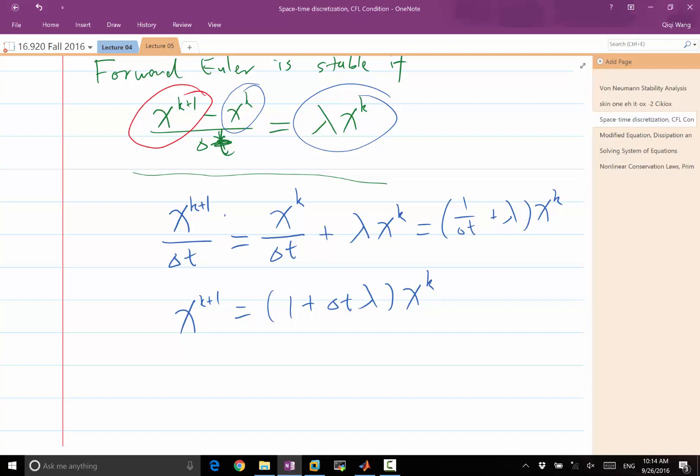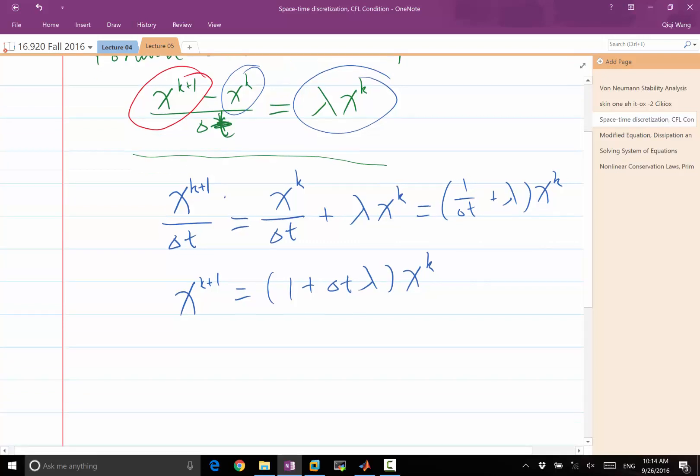the difference between the fourth order scheme and the fifth order scheme. If they agree pretty well, it thinks the solution is accurate enough and keeps going. Otherwise, it tries to reduce delta t to make it better. So you can do the same thing there, just to move all the unknowns to the left hand side, move all the knowns to the right hand side.